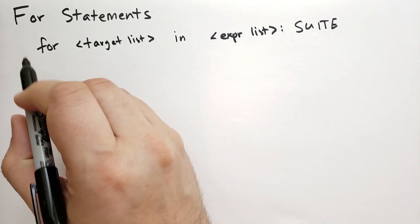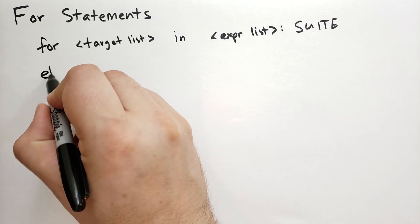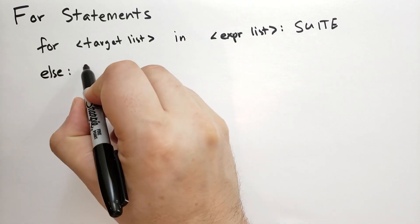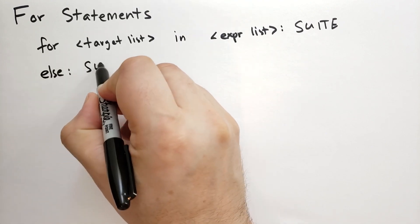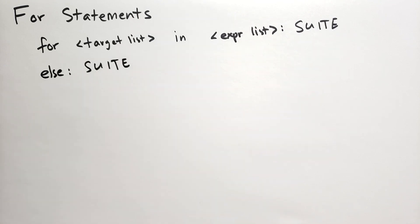Optionally, and I think somewhat uniquely to Python, there is an else block that you can also specify, just like you can for the while loop.